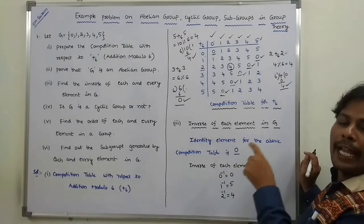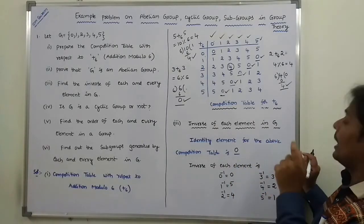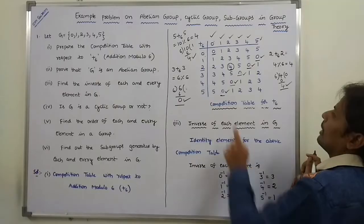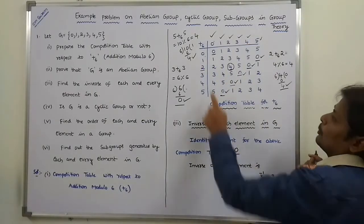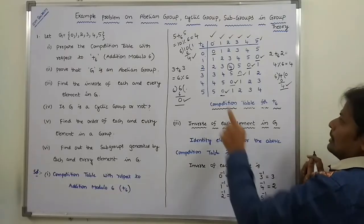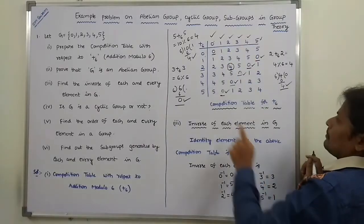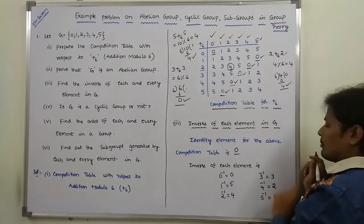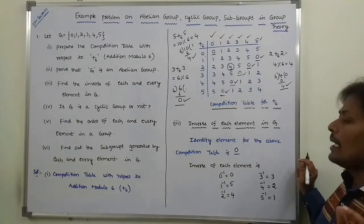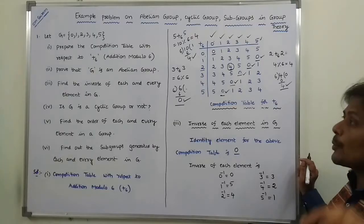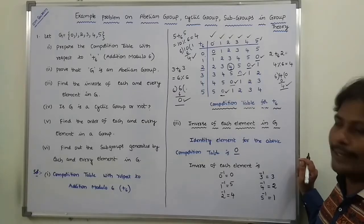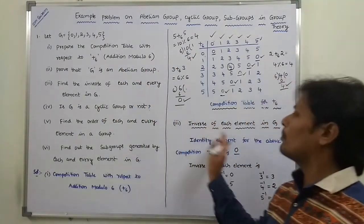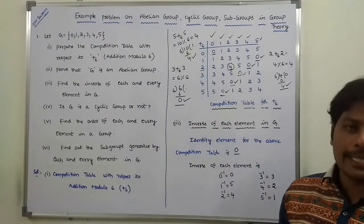For each and every element in the given group G, the inverse exists. 0⁻¹ = 0, 1⁻¹ = 5, 2⁻¹ = 4, 3⁻¹ = 3, 4⁻¹ = 2, 5⁻¹ = 1. For each and every element, the inverse also exists in the given group G. Now the first sub-problem and third sub-problem are completed.